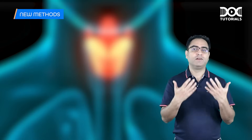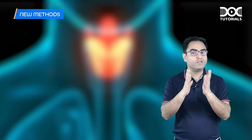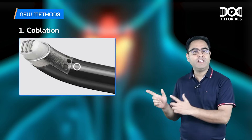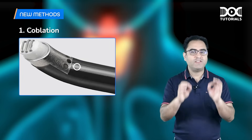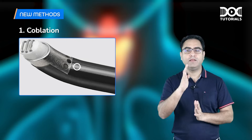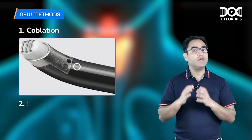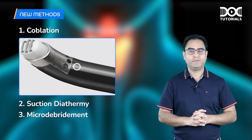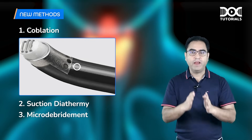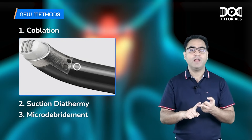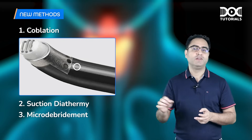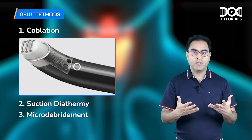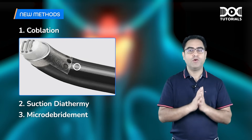The newer, safer methods include: number one, coblation — the best method of adenoidectomy for exam purposes; number two, suction diathermy; and number three, microdebrider. These three techniques — coblation, suction diathermy, and microdebrider — are endoscopic methods where you visualize the field, making them safer with less risk of complications and less bleeding.